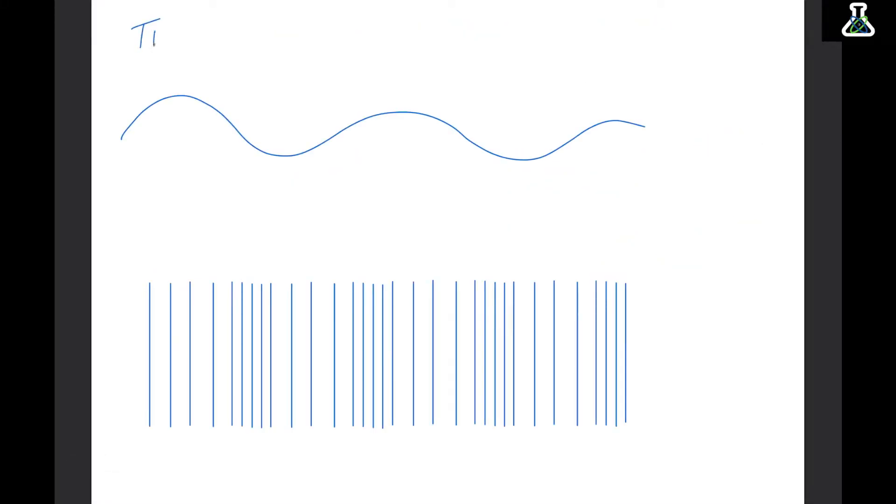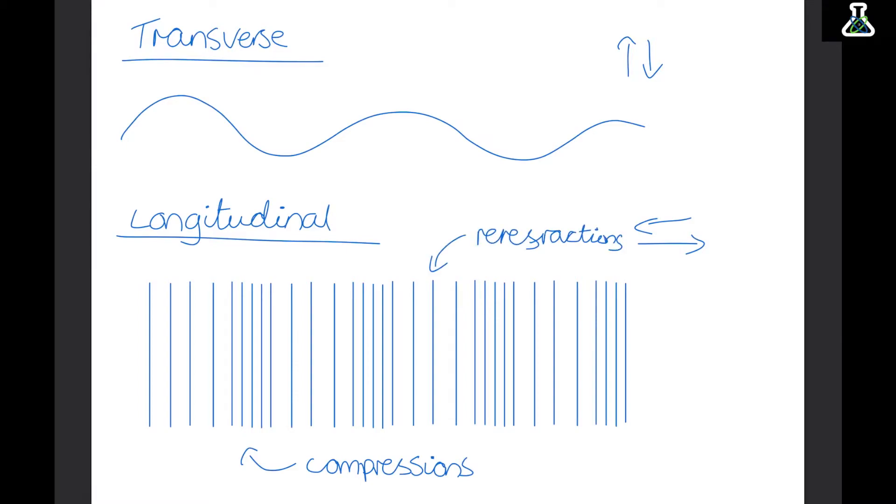Now there are two types of waves: transverse waves and longitudinal waves. Transverse waves are the ones we just looked at - their vibrations go up and down. But in longitudinal waves the vibrations go left and right. Instead of having crests and troughs, they have compressions, which is when the vibrations are close together, and rarefactions, which is when the vibrations are far apart.